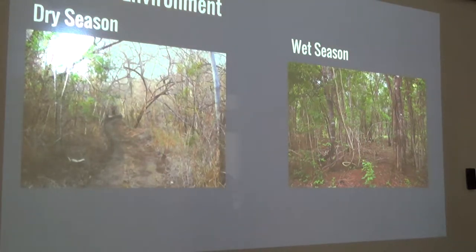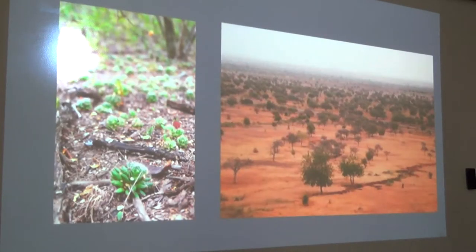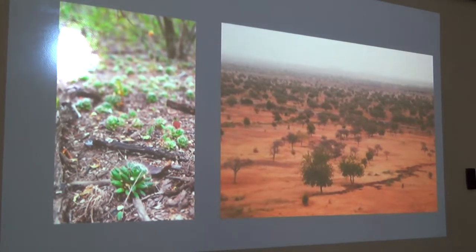Geography of a region can play a role in the wet and dry seasons. Brazil and India have different geographies, and Brazil's dry season is a lot drier than India's. Both receive several hundreds of centimeters of rain per year, but Brazil gets a lot more in a shorter amount of time.